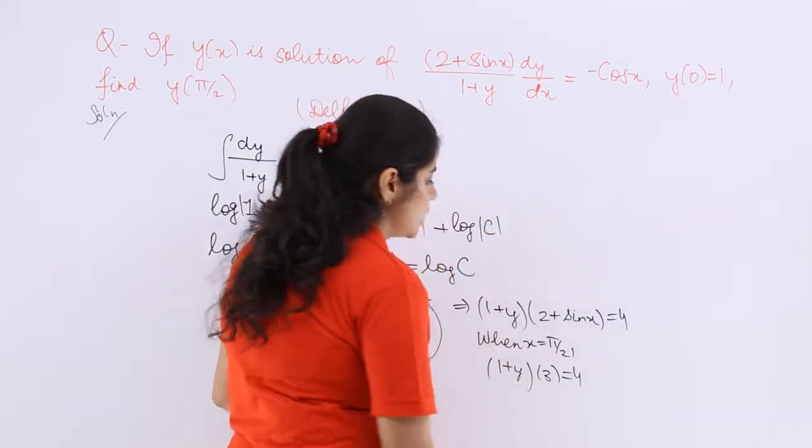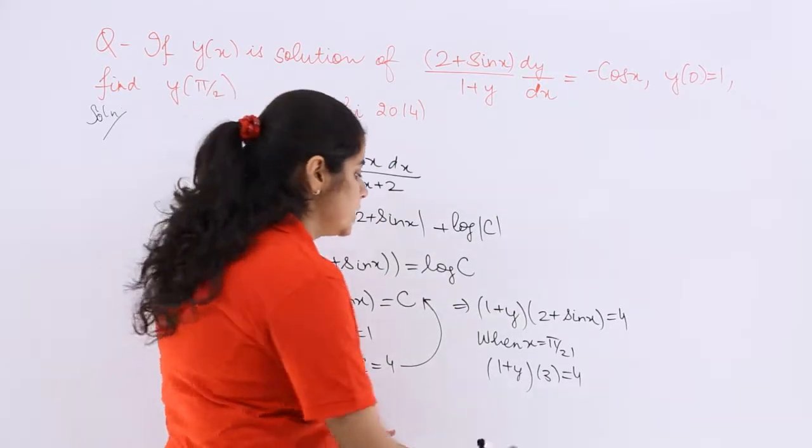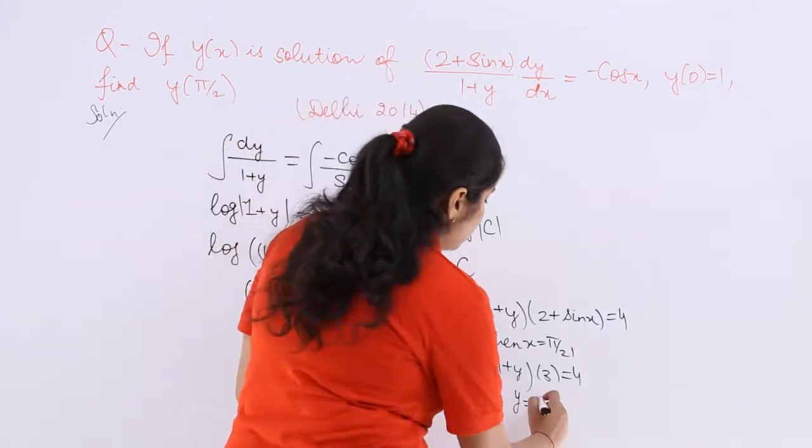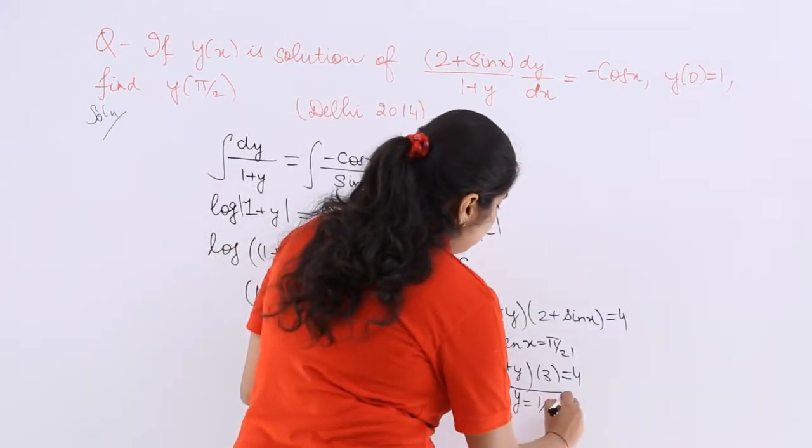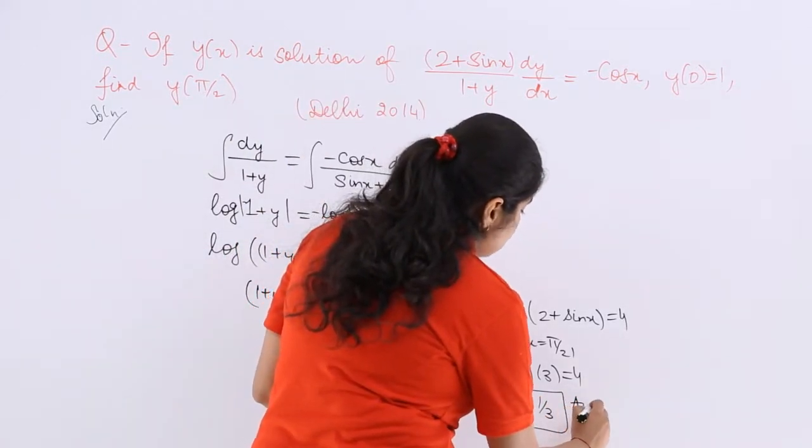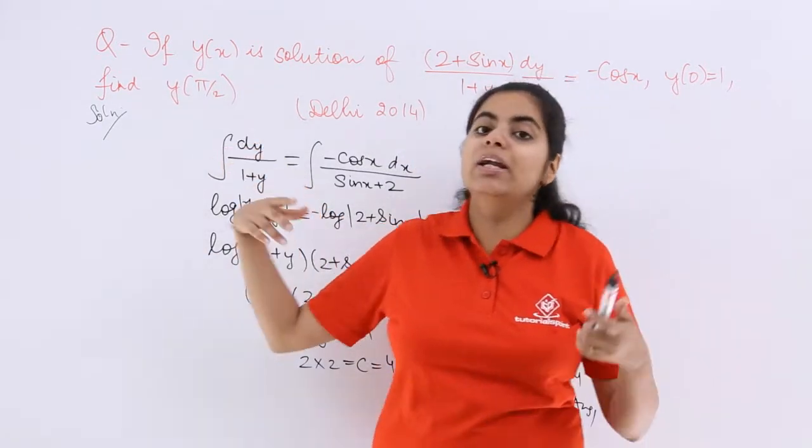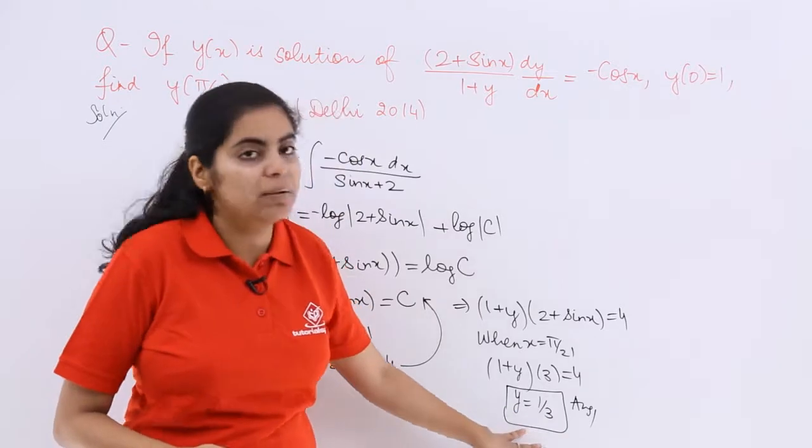And here it is 4. Now see what should be the answer like. y is equal to 4 upon 3 minus 1 which is equal to 1 upon 3. So your answer to the given question was y of pi by 2, what it should be? It should be 1 by 3.